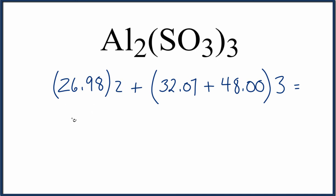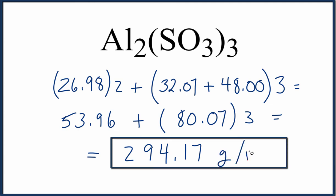So we have 53.96 plus 80.07, which we'll multiply by three. We multiply this by three, we add the 53, and we come up with the final molar mass of 294.17, and you have to have the units here, grams per mole.